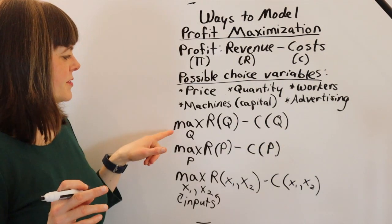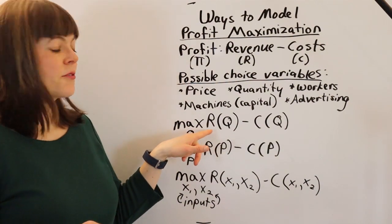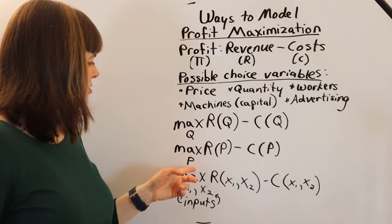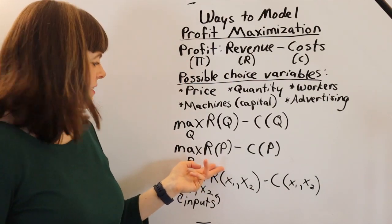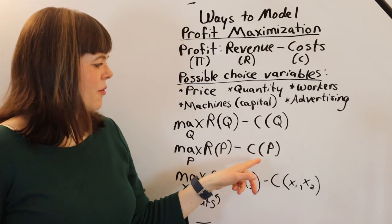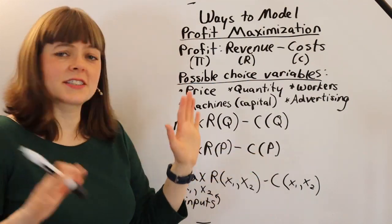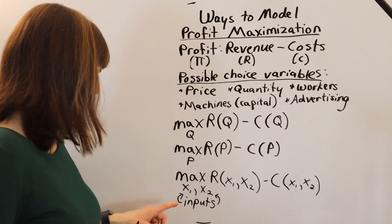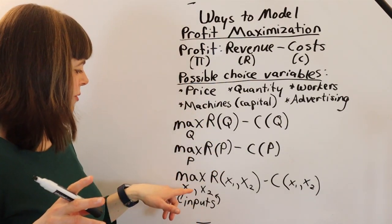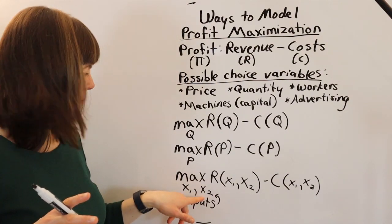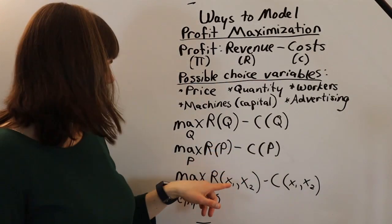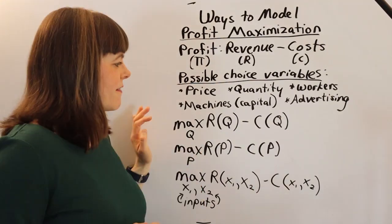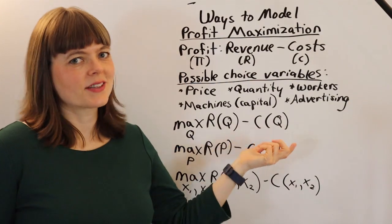Three variations: you could maximize by choosing quantity to produce — revenue as a function of quantity minus costs as a function of quantity. If you choose price, you've got revenue as a function of price minus costs as a function of price. Or, maximized by choosing inputs such as labor and capital — revenue minus costs as a function of those inputs. All of these are completely viable models.